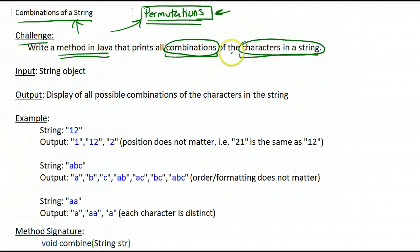So the different groupings or selections, and we'll see some examples. The input to your method will be a string object, and the output will have to be a display of all the possible selections or combinations of the characters in the string.